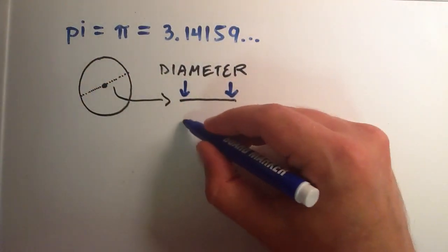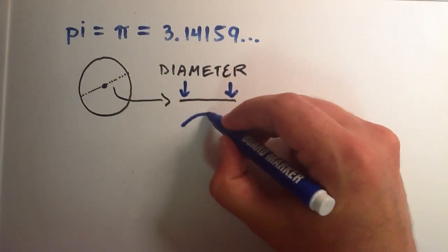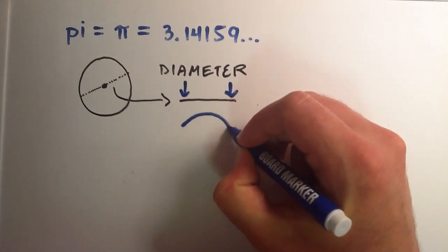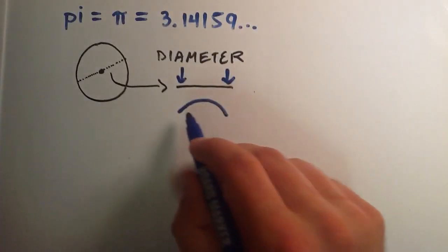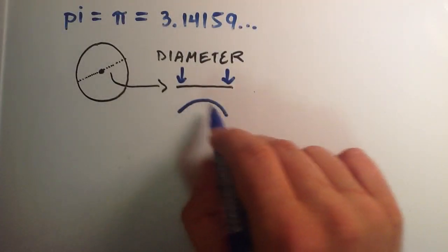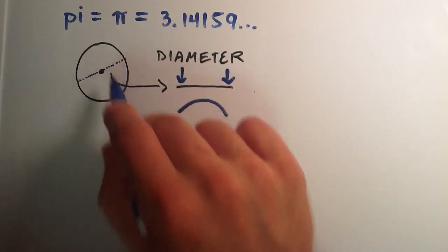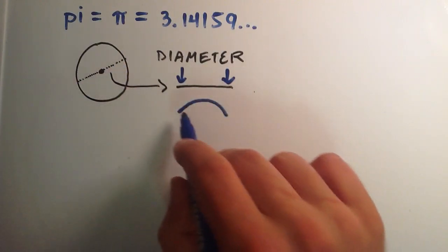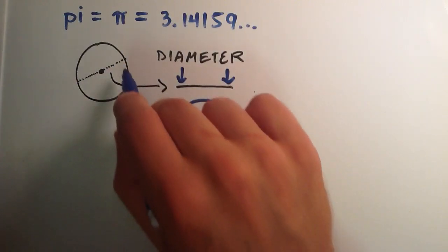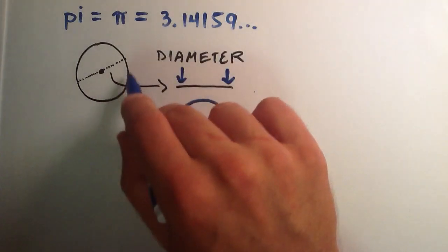I'm going to bend this line so that it kind of forms like a circular shape here. And my goal in doing this is I want this shape that I'm creating to be the same length as the diameter, but I want it to curve so that it fits nicely around the outside edge of the circle.